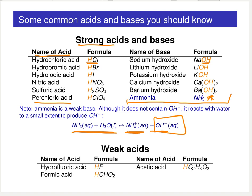There are also a couple of weak acids to be familiar with: hydrofluoric acid, formic acid, and acetic acid — one of the characteristic flavors of vinegar. These compounds are weak acids because, yes, they do have protons shown in orange that will dissociate and increase the proton concentration in solution. However, weak acids do not completely dissociate — strong acids and bases do completely dissociate, but weak acids do not.